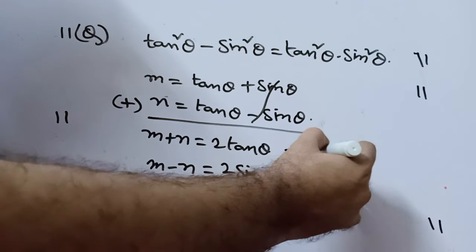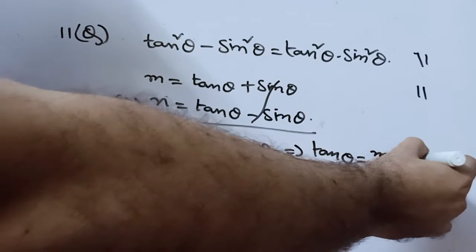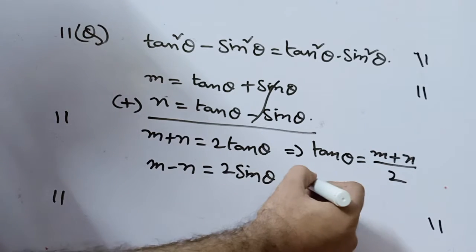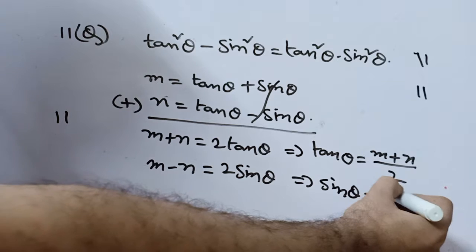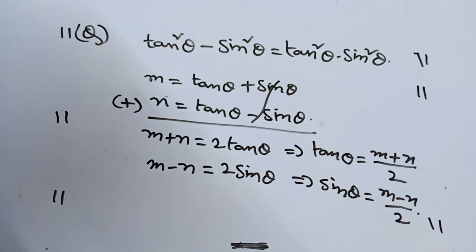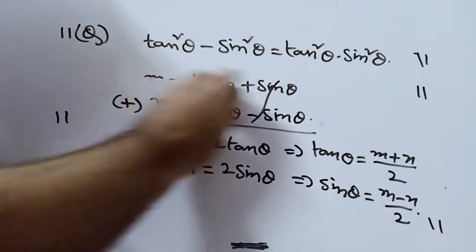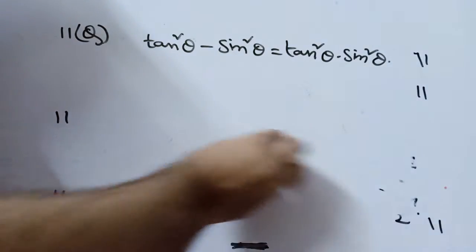From this, tan theta is m plus n by 2. And from this, sin theta is m minus n divided by 2. This is the next step. You can note down.